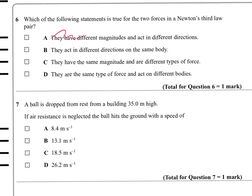So we can rule out things that have different magnitudes, rule out things that act on the same body, and rule out things that have a different nature or different type of force. That leaves D - they are the same type of force and act on two different bodies.